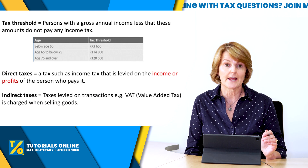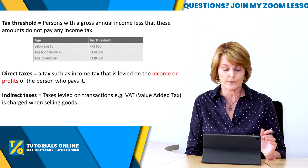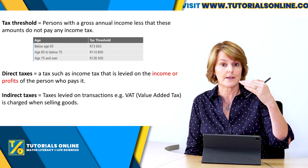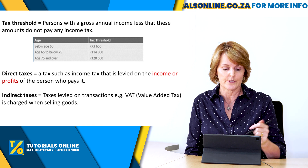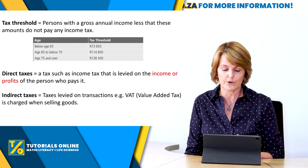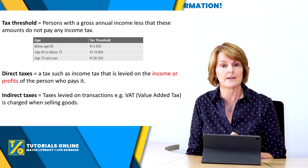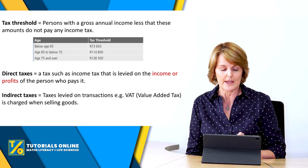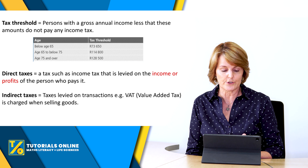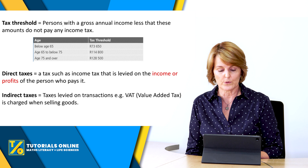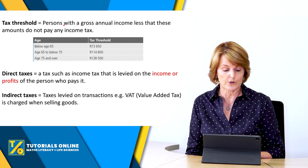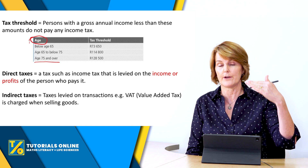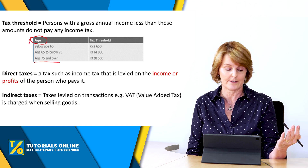Over here you'll see another table — it's a tax threshold table. A threshold is a limit: if your income is more than that amount then you start paying tax; if your income is less than that, you don't pay tax. Persons with a gross annual income less than these amounts do not pay any income tax, and it varies by age. If you're 75 and over, your tax threshold is 128,500 rand — you can earn up to that before you start paying tax, which is great.